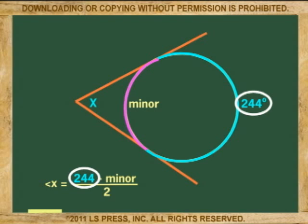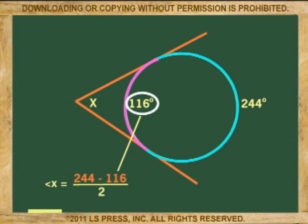For example, if the major arc is 244 degrees, then the minor arc is 360 minus 244 or 116 degrees. Now we subtract the minor arc, 116 degrees, from the major arc, 244 degrees. We get 128. 128 divided by 2 is 64. So angle X is 64 degrees.